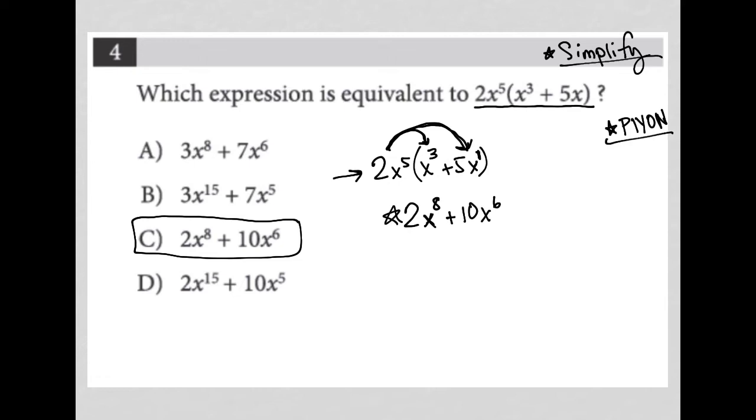So typically when I'm plugging in my own number, I like to say that the number is equal to 2. So I'm going to say x is equal to 2. I like to keep it small. So if x is equal to 2, I'm going to plug that into my original question and say, well, that becomes 2 times 2 to the fifth,